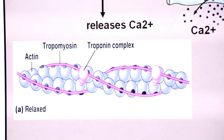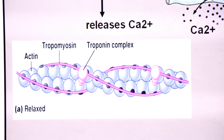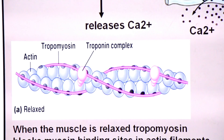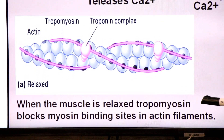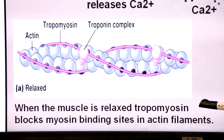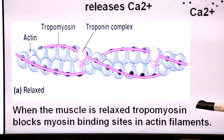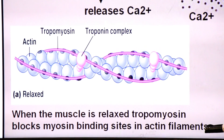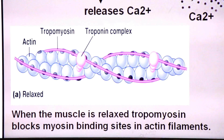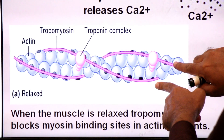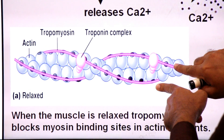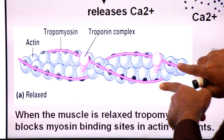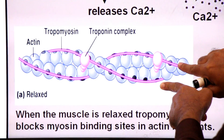When the muscle is in a relaxed state, a rod-like protein called tropomyosin blocks the myosin binding sites on actin. Tropomyosin is a protein that blocks the myosin binding sites, keeping the muscle inactive. It is necessary that tropomyosin be displaced from the binding sites so that the binding sites become exposed.